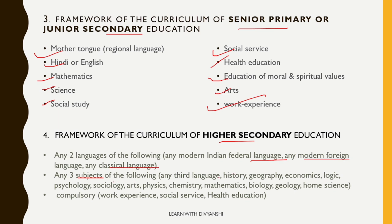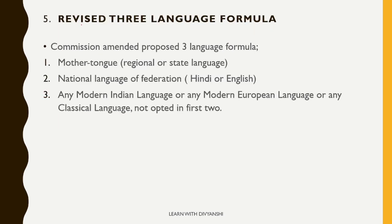At the higher secondary level, in addition to two languages, any three subjects from the following should be chosen: a third language, history, geography, economics, logic, psychology, sociology, arts, physics, chemistry, mathematics, biology, geology, and home science. Compulsory subjects should include work experience, social service, and health education. The curriculum also includes a revised Three Language Formula, which was first implemented in 1956 by the Central Education Advisory Board. Kothari Commission amended this formula.